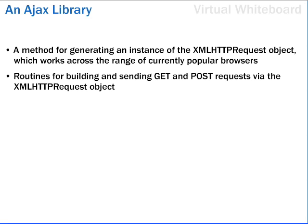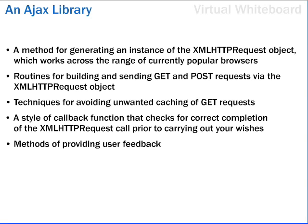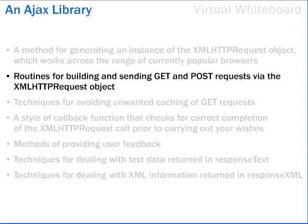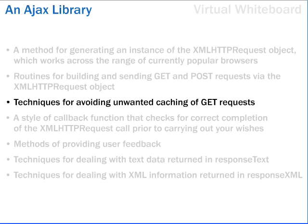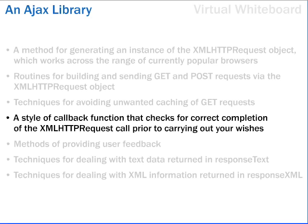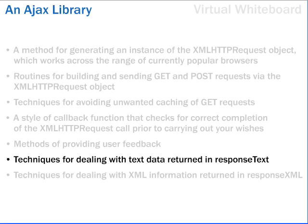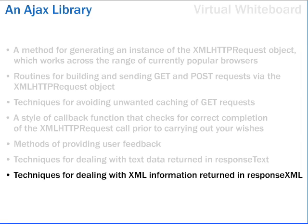There are a number of JavaScript code techniques for implementing the various parts of an Ajax application. Among these methods are a method for generating an instance of the XMLHttpRequest object which works across the range of currently popular browsers. Routines for building and sending GET and POST requests via the XMLHttpRequest object. Techniques for avoiding unwanted caching of GET requests. A style of callback function that checks for correct completion of the XMLHttpRequest call prior to carrying out your wishes. Methods of providing user feedback. Techniques for dealing with text data returned in responseText, and techniques for dealing with XML information returned in responseXML.